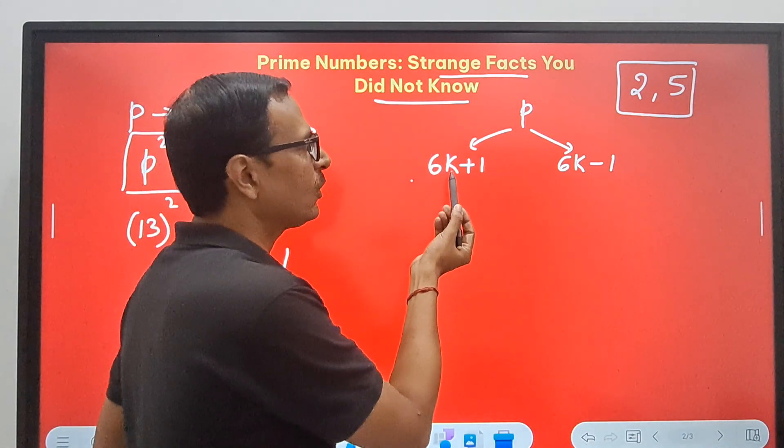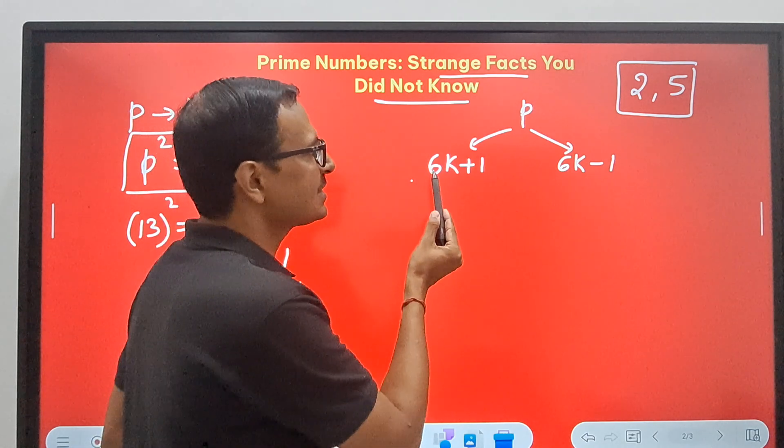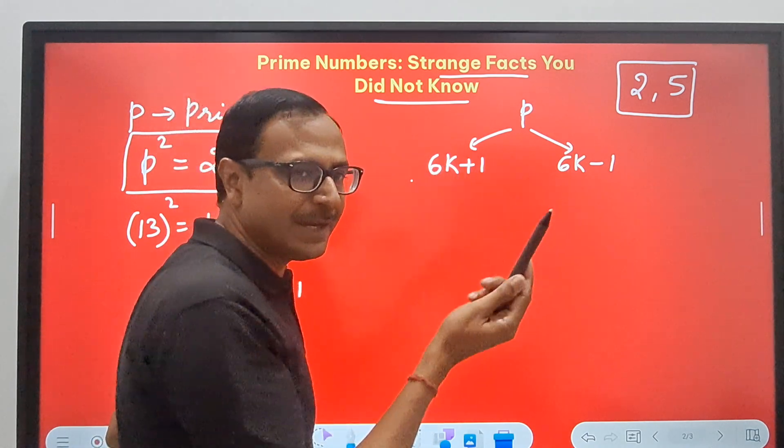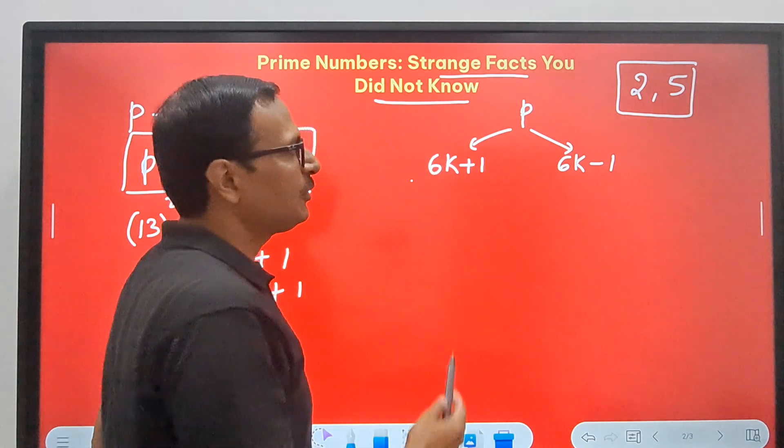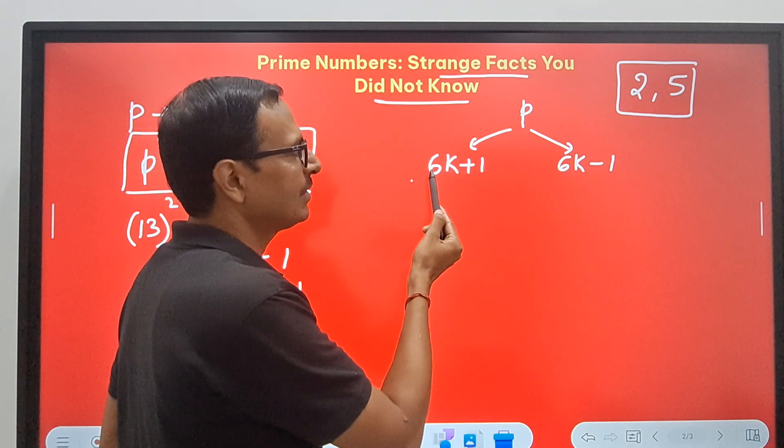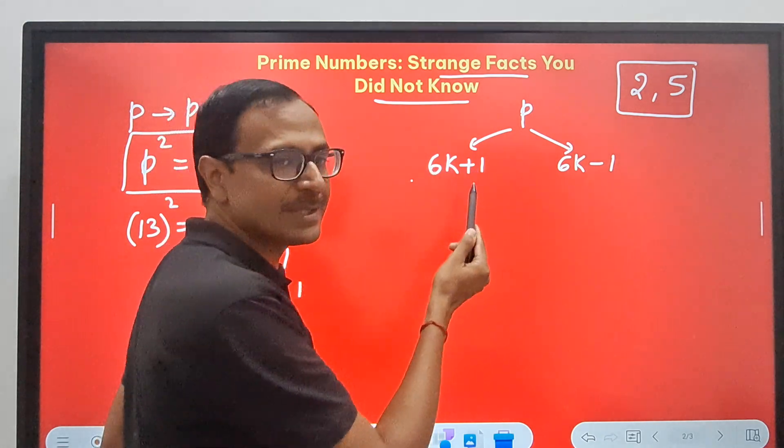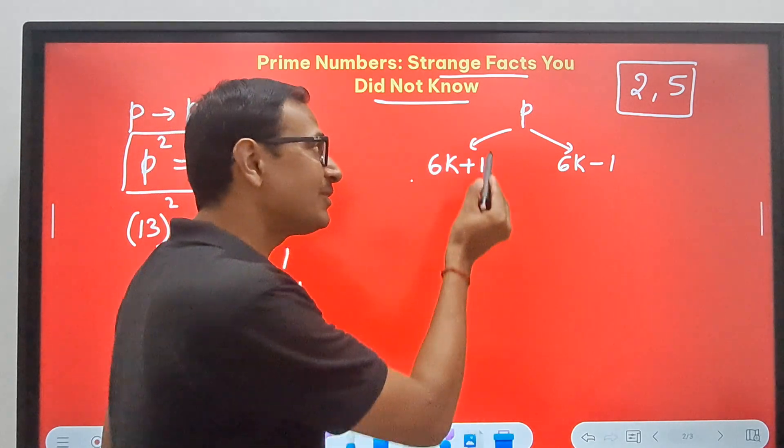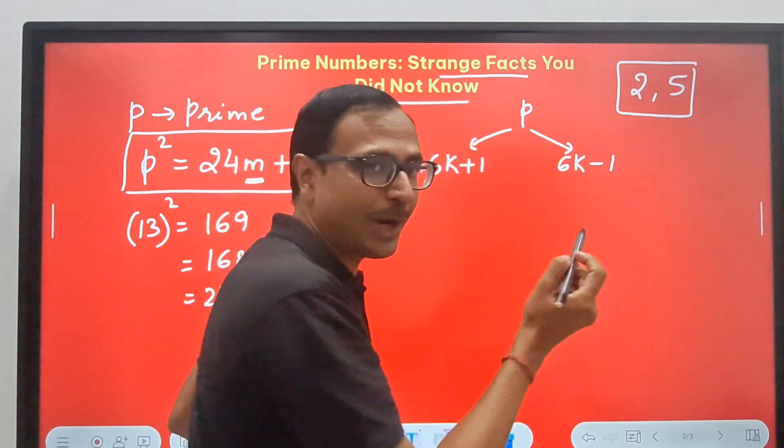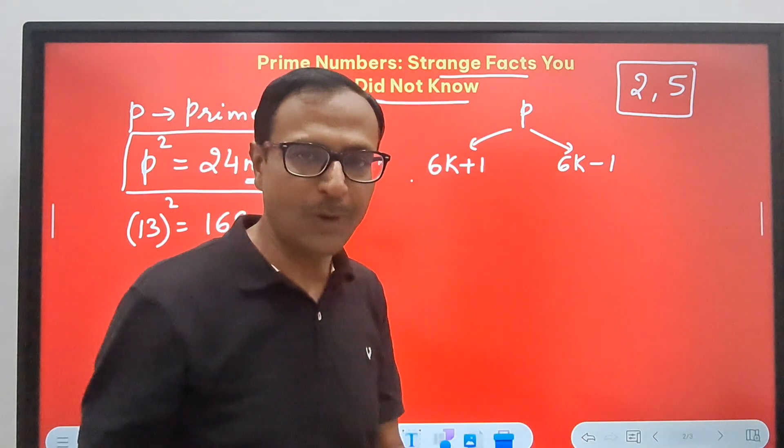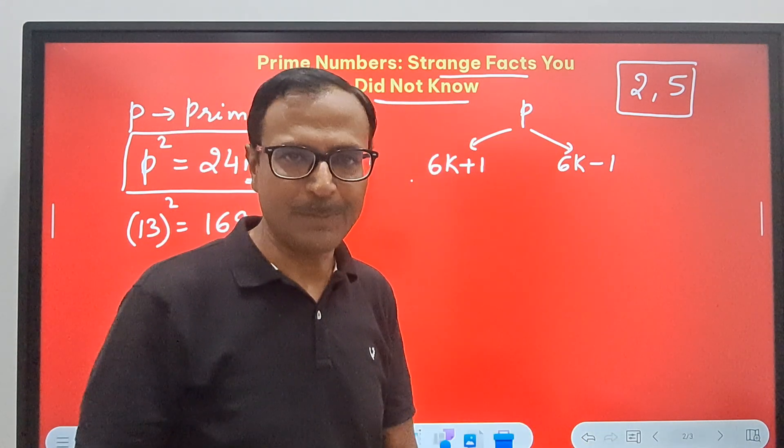Like if you put k equal to 3, 6 times 3 is 18 plus 1 is 19, and 19 is prime. If you put 7, 7 times 6 is 42 plus 1 is 43, again prime. So if this is not prime, then this will be prime. So either of the two forms will definitely work for a prime number.